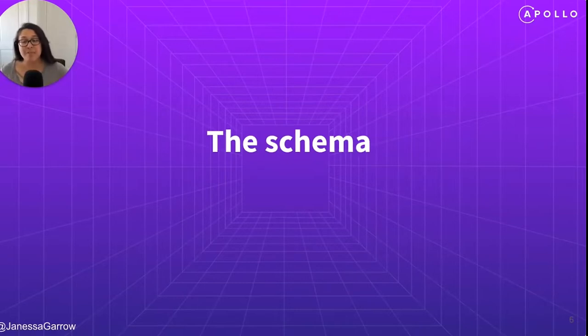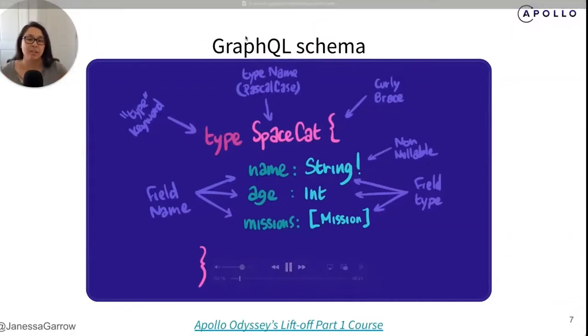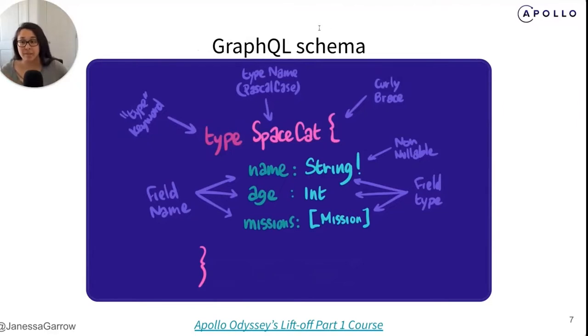The backbone of a GraphQL server is called the schema. The schema describes the shape of all available data and defines a hierarchy of types and fields that will be populated from your backend data stores. So the schema acts like a menu or a contract between the server and client, defining what the GraphQL API can and can't do and how clients can request or alter data. The syntax for a schema follows what's called the schema definition language, or SDL. If you're familiar with JavaScript, it looks pretty similar to objects. At its core, a schema is a collection of object types that contain fields. And each field has its own type, which can be scalar, like an int or a string, or even another object type.